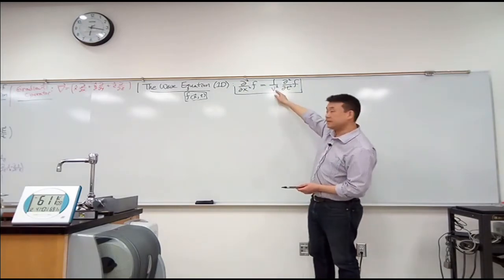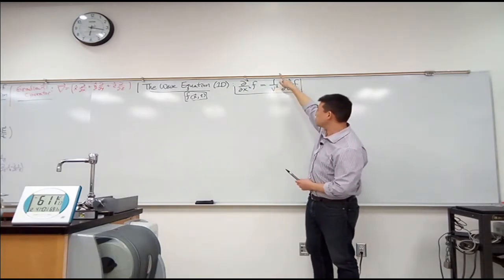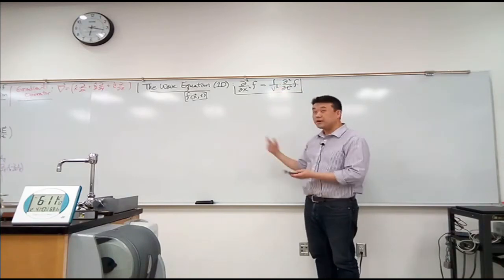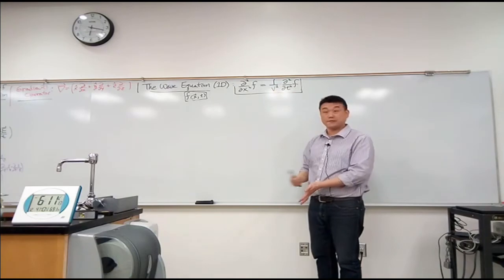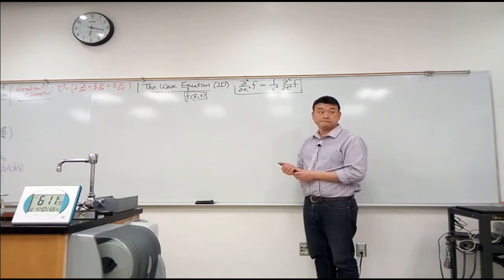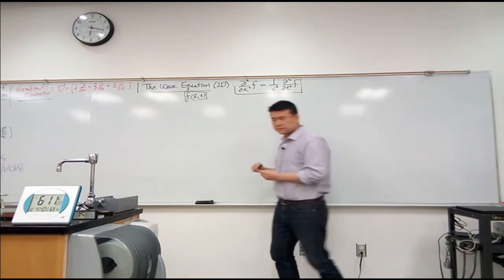And this v, the constant for this is written as one over v squared for a good reason. The constant that appears here does happen to be actual wave speed. Did all of this begin to look familiar?